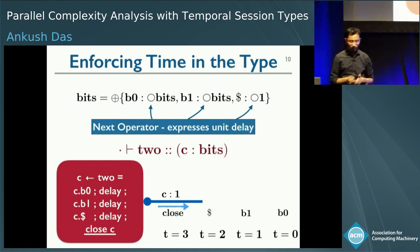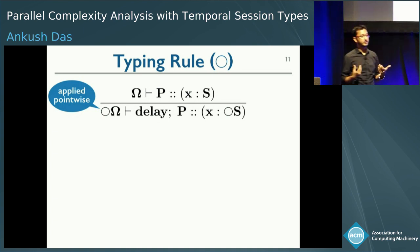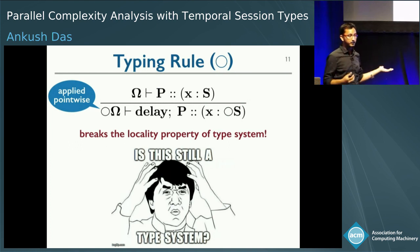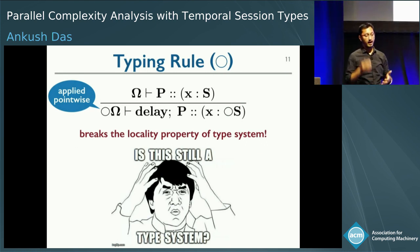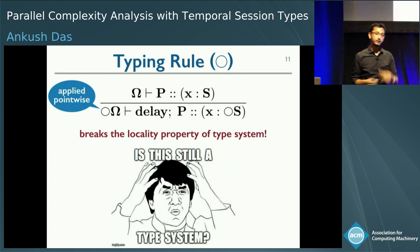Let's look at the typing rule for the circle operator. Executing a delay consumes the circle, applied point-wise: the circle is consumed from every channel in the context and the result channel. This is a somewhat unusual typing rule — it breaks the locality property of the type system, because executing a single delay changes the type of everything in the context and the result. This is subtle: we tried hard to make the delay rule local, but realized that time is a global property — it advances on every channel, not just one. So we had to use this global version of the rule.